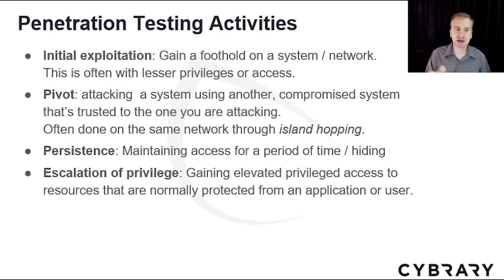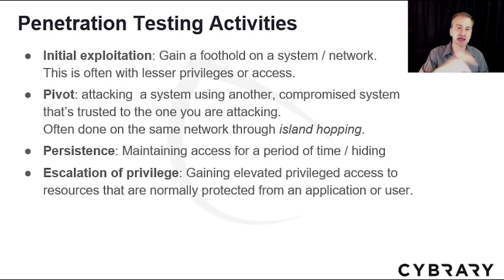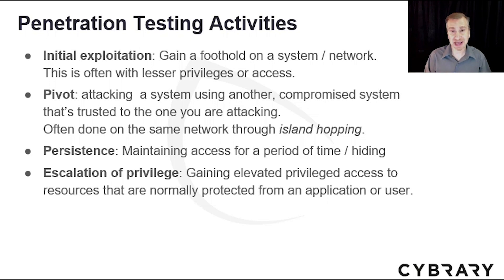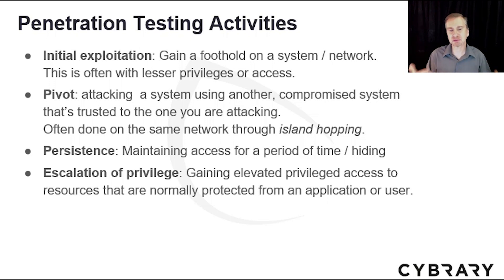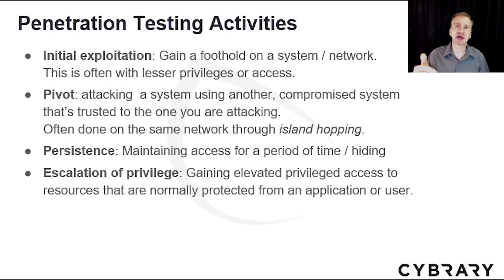Once I have access at some level, I will try to pivot — attacking one system using another system or one account using a different account, taking the compromised system and attacking another that's been trusted. This is often done on the same network through island hopping. Persistence is maintaining access for a period of time, basically hiding — gaining initial access but staying in plain sight to avoid triggering any intrusion detection system. Lastly, escalation or elevation of privilege involves gaining elevated privileged access to resources normally protected, starting with a base level as a normal user and trying to gain root or administrator access to conduct even more damage and exploit the system.